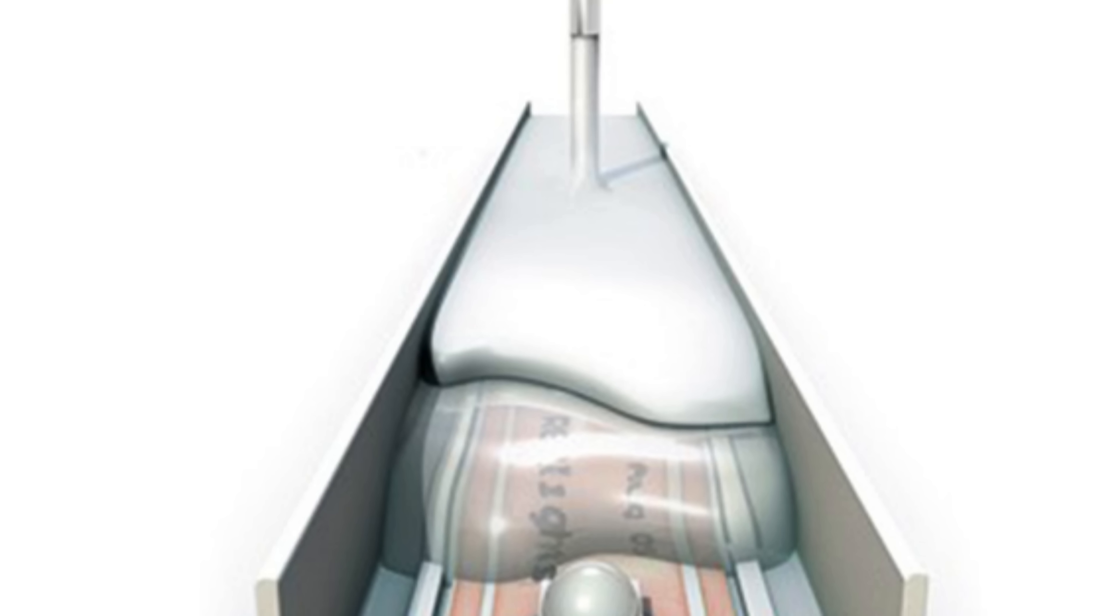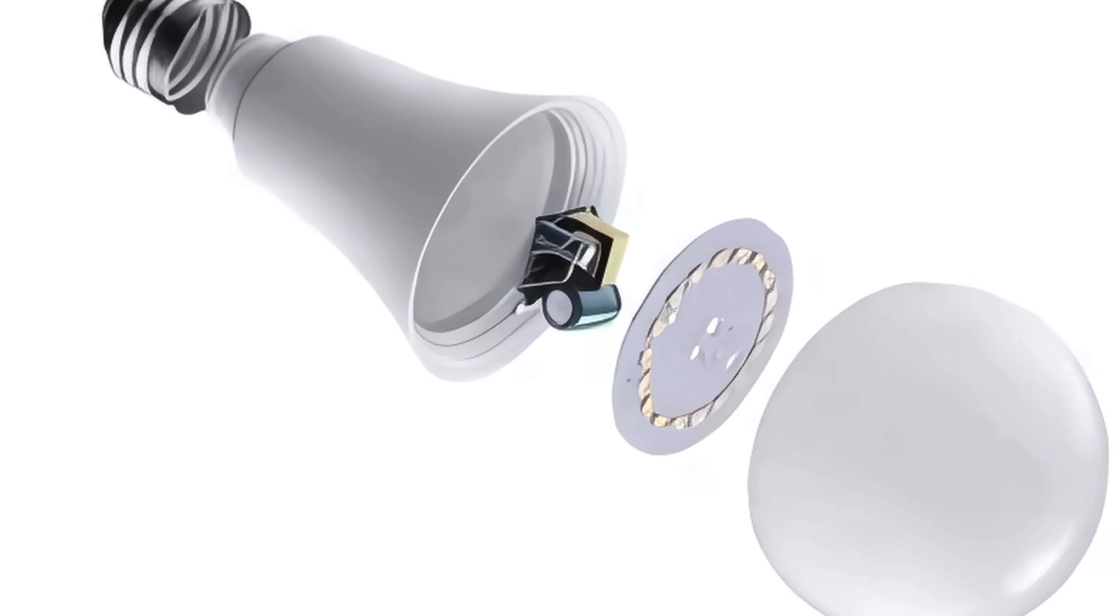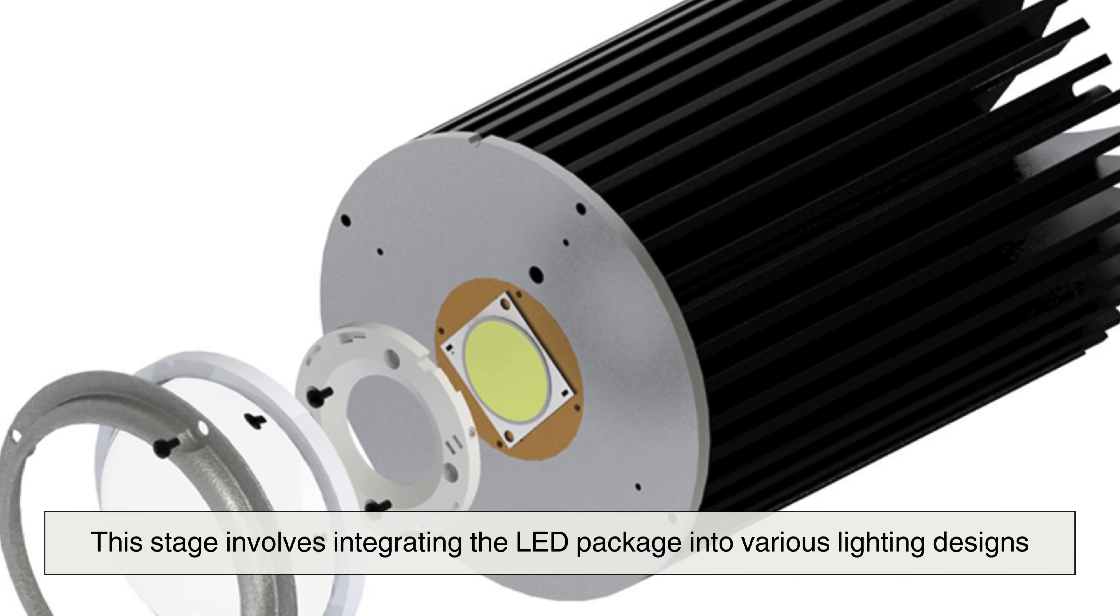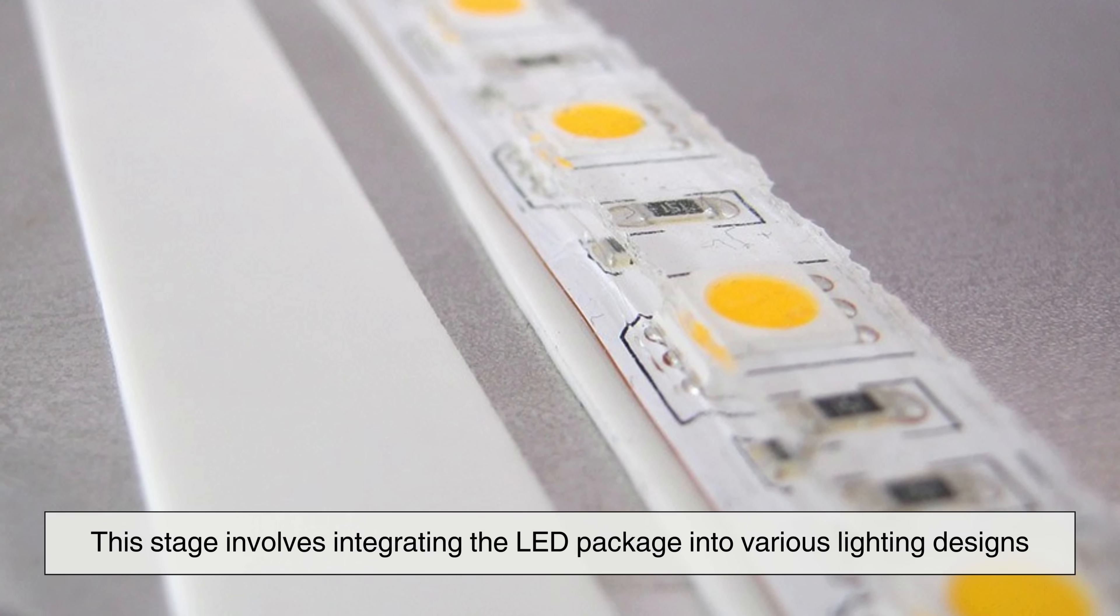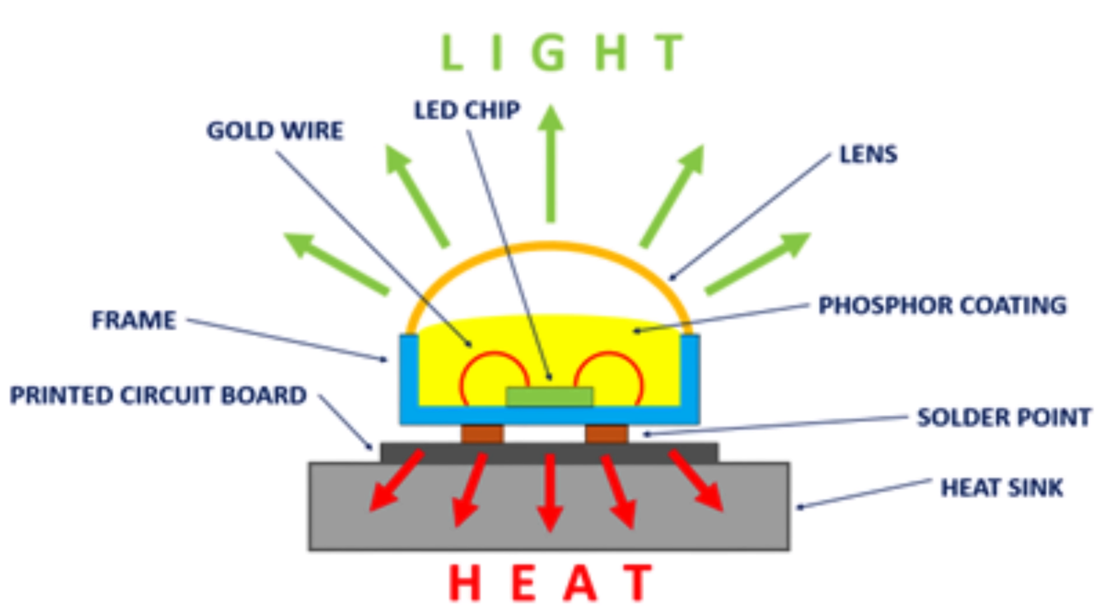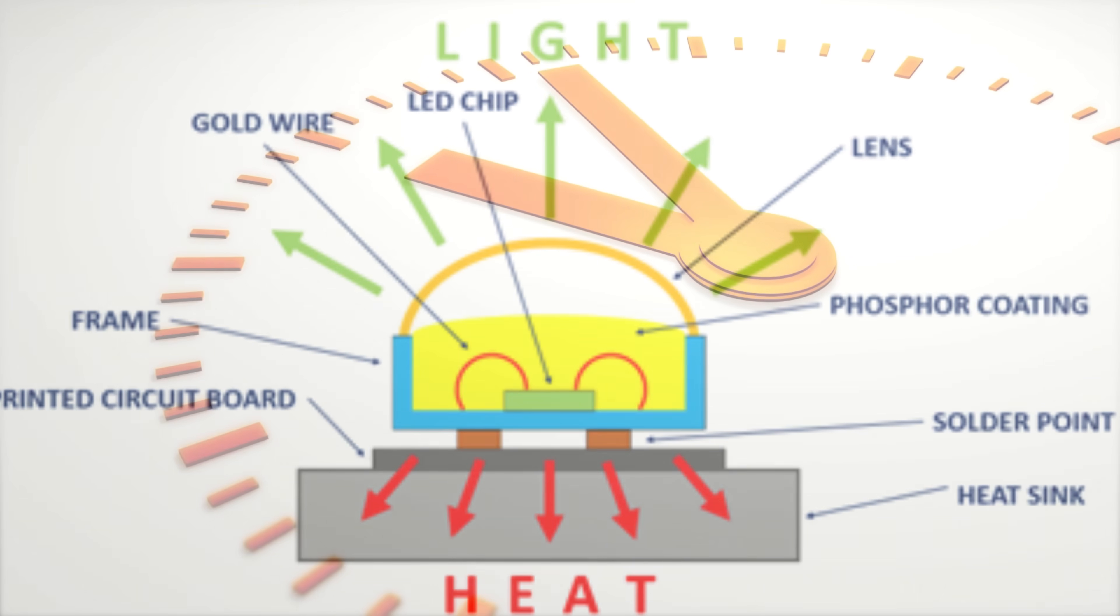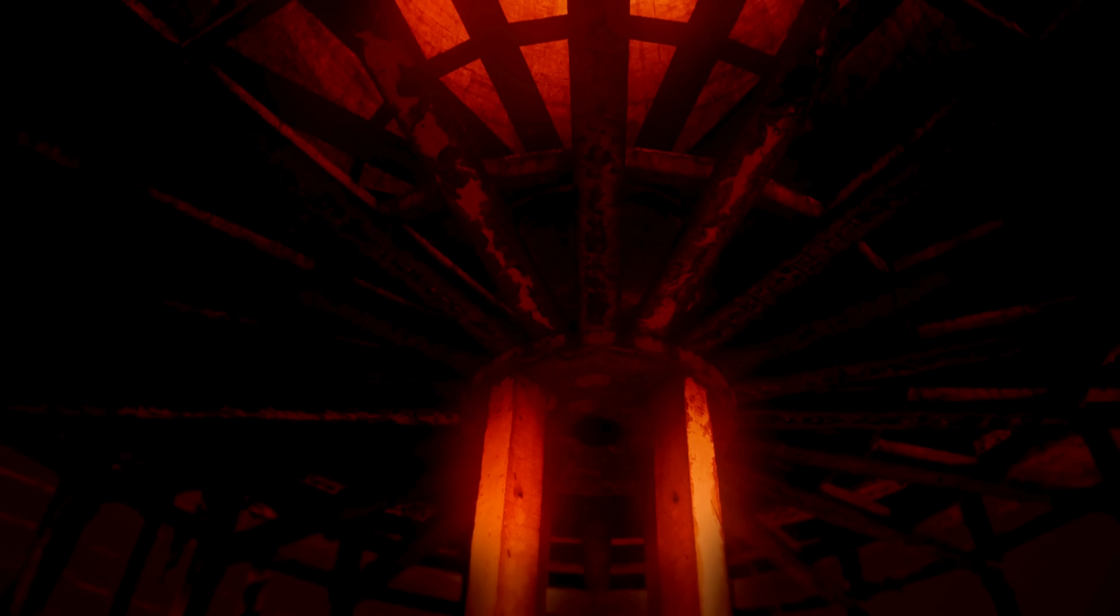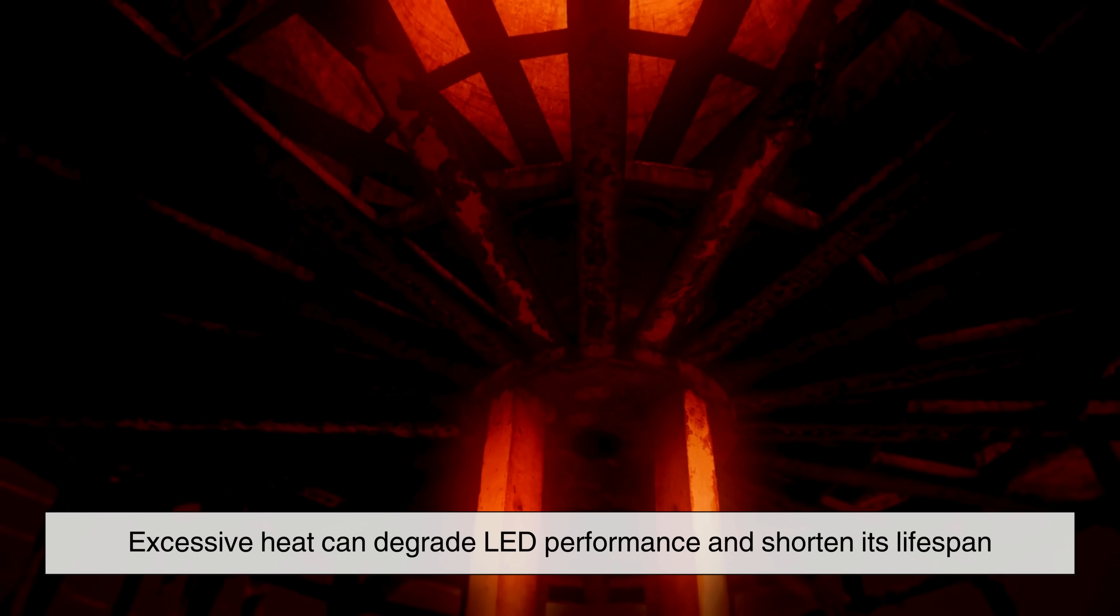After the LED chips are encapsulated and tested, they are ready to be assembled into usable lighting products. This stage involves integrating the LED package into various lighting designs, from small indicator lights to large LED panels and bulbs. The LED components are mounted onto heat sinks, which help dissipate heat and improve longevity. Proper thermal management is essential, as excessive heat can degrade LED performance and shorten its lifespan.